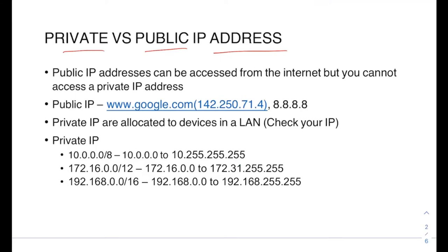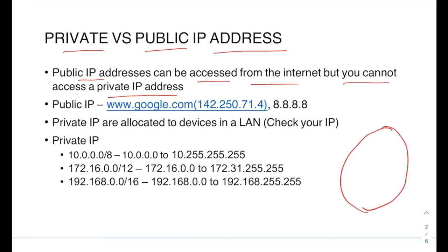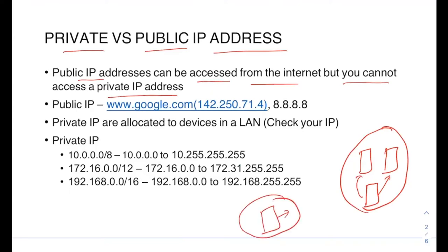Public IP addresses can be accessed from the internet, whereas you cannot access a private IP address. Public IP addresses are public in nature, so whenever a machine has a public IP address you can access it — you can run a ping command and provide that public IP address and you should be able to ping that machine. But in the case of a private IP address, that's not possible outside your network. If you have a LAN with two or three devices you can ping a private IP address within the network, but from one network to another you cannot directly ping a device that has a private IP address.